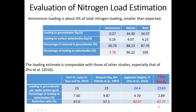In this calibration area, ammonium loading is about 4 percent of total nitrogen loading — not as high as at Alligator Heights, where it's between 10 and 20 percent.